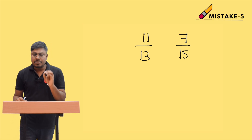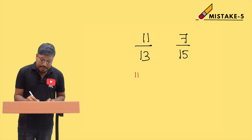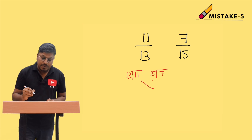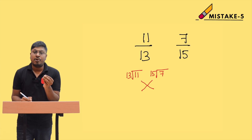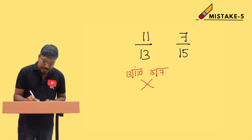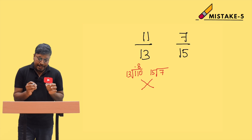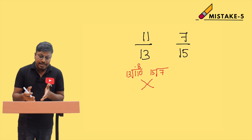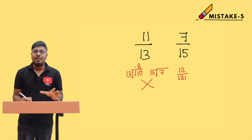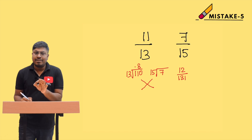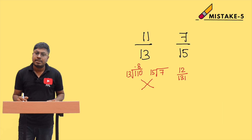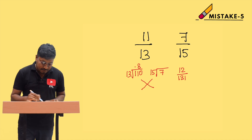Usually I have seen students divide both numbers — they divide 11 by 13 and then 7 by 15. This is where many students make a mistake, because in the decimal point or division part, you have to place a point, add a zero, and then multiply. This is especially problematic for harder numbers like 12 by 131. This is not the right way to approach it.